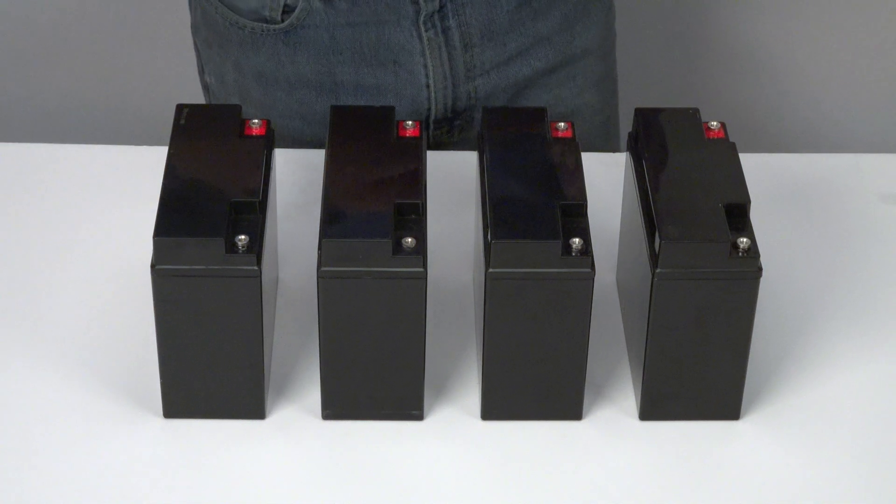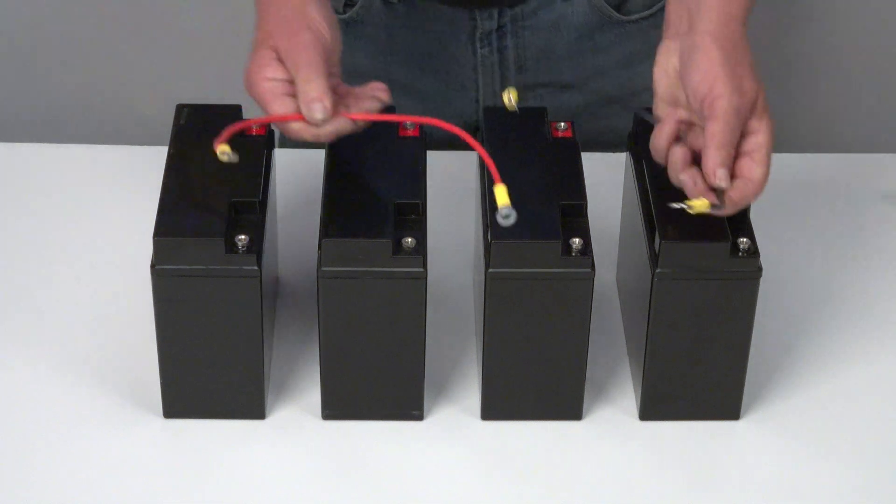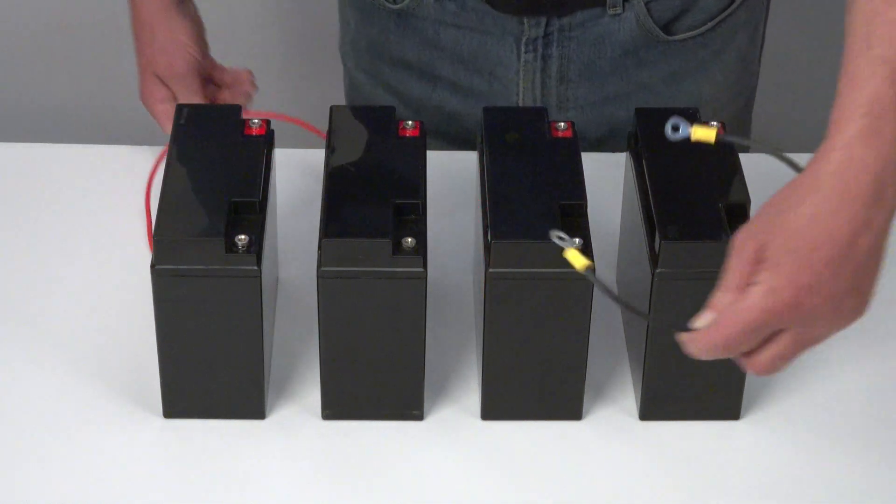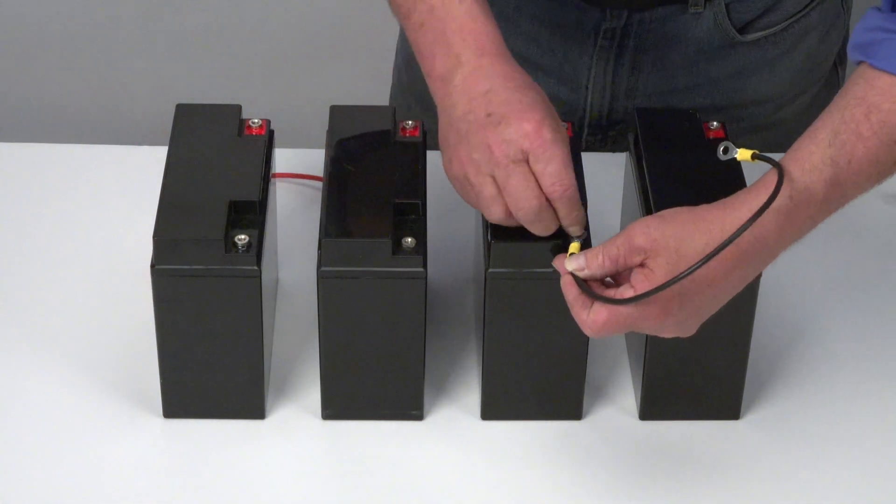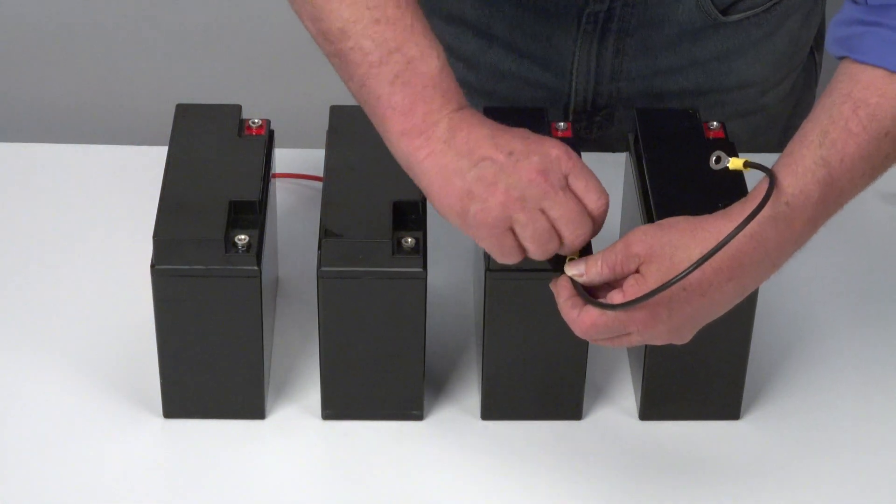Now I'm going to show you how to wire these in parallel. I've got, again, a set of jumpers. And I'm going to connect the first two batteries in parallel by connecting both grounds together.